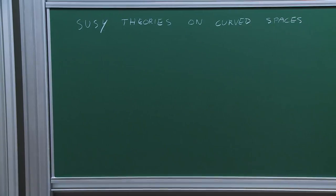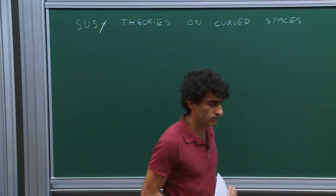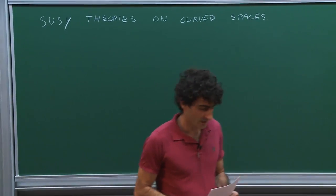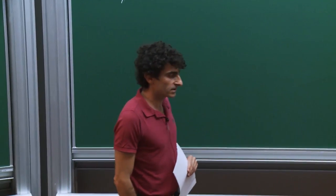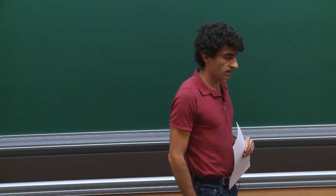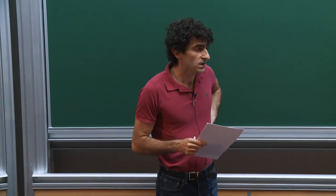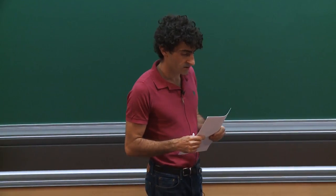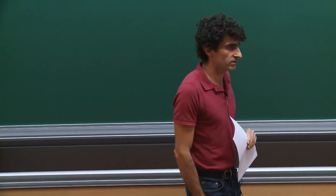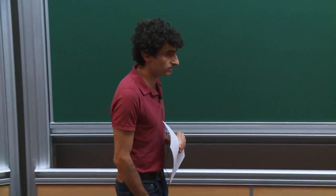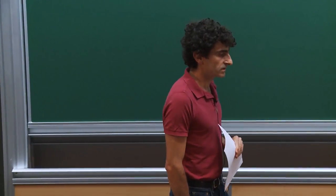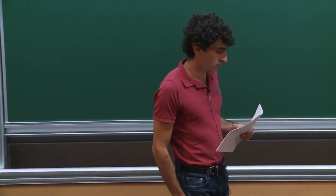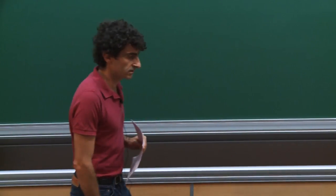Let me start by giving some introduction and motivation to the topic. This is a school about localization, and as I'm sure you know, localization is a very powerful technique by which one can compute exactly many interesting observables in supersymmetric gauge theories, even in theories which are strongly coupled. This technique allows us to get a non-perturbative determination of certain observables. One thing which is often important when trying to localize a theory is to deform it from its definition in flat space.